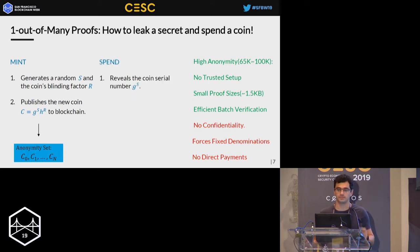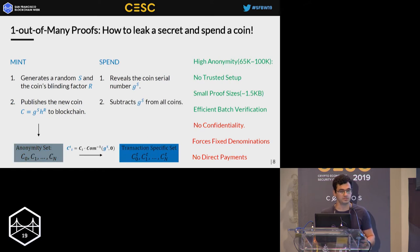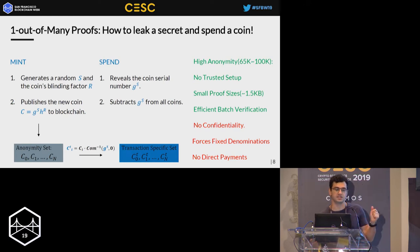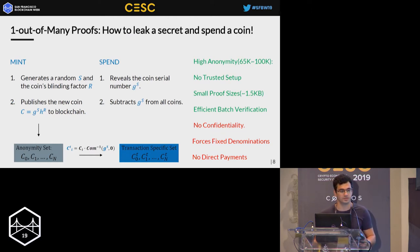When the user wants to spend it, he first reveals the coin serial number, which prevents double-spending attacks so the same coin cannot be spent twice. After revealing the serial number, the user scans the set of all previously minted coins and homomorphically subtracts this value from all commitments. This results in a new set of commitments where one will be a commitment to zero, and knowledge of this commitment can be proved with one out of many proofs.